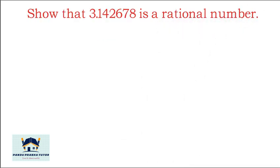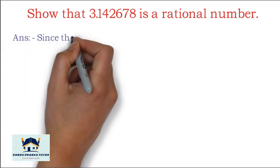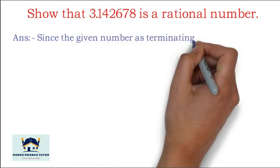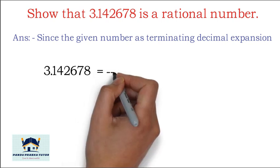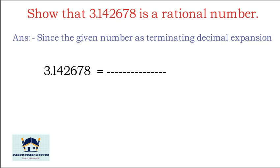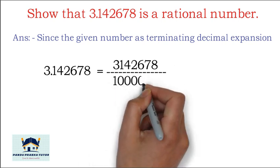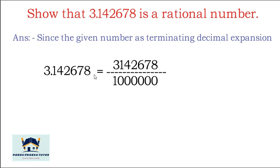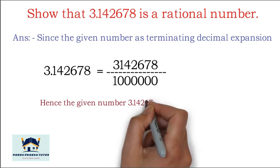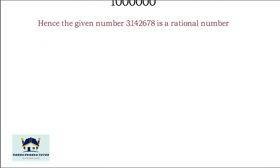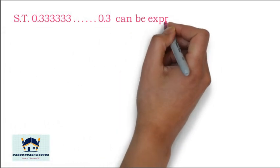Example: Show that 3.142678 is a rational number. Since the given number has a terminating decimal expansion, we can write it in the form p/q. Therefore 3.142678 = 3142678 divided by 1 followed by 6 zeros (since there are 6 digits after the decimal point), so it equals 3142678/1000000. Hence 3.142678 is a rational number.